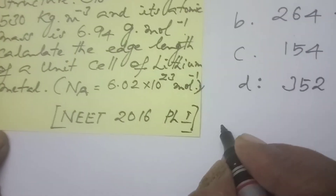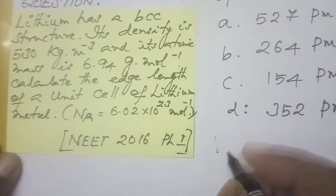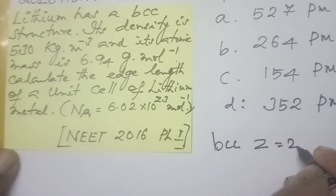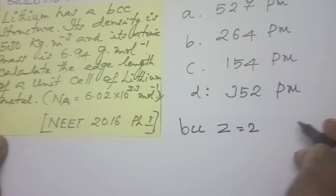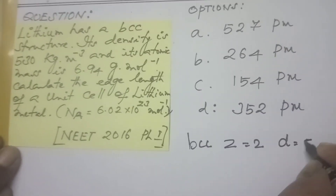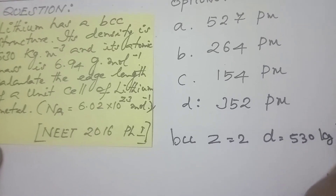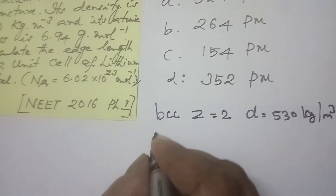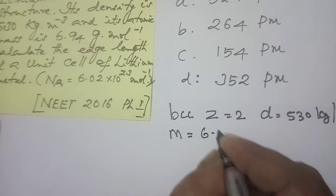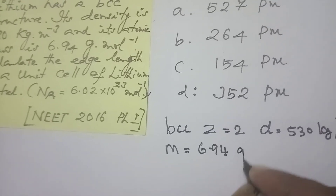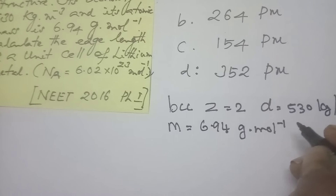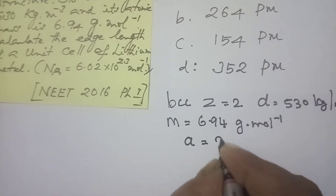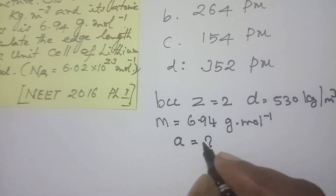The question has a lot of tricky parts. Let me write the data one by one according to the question. First, it is given as BCC, so Z is equal to 2. Next, density is given as 530 kilogram per meter cube. Atomic mass M is equal to 6.94 gram per mole. They are asking for the edge length A of the unit cell of lithium.